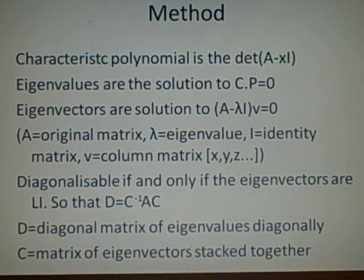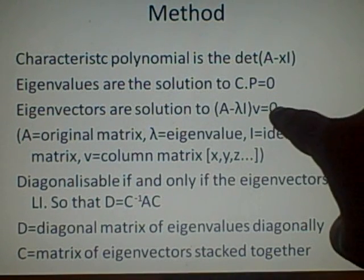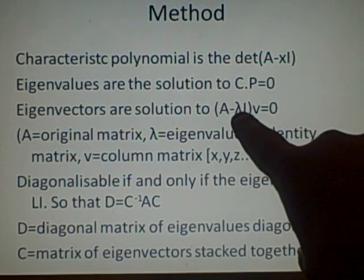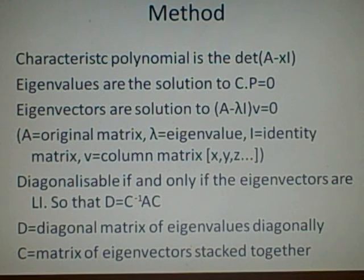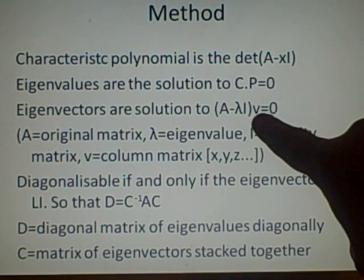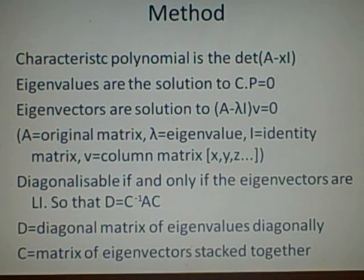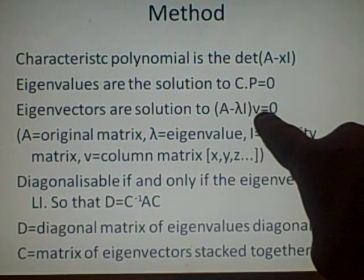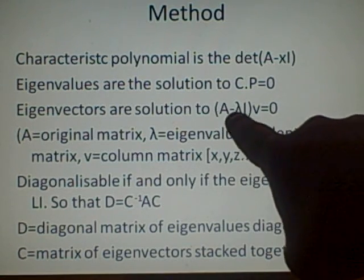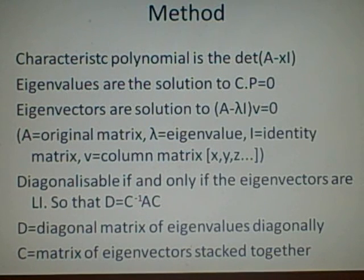And the eigenvalues are the solutions to this when it equals zero. Now, once you've got those, we use each of them, we're referring to them as lambda here. For each of them, find an eigenvector. So with the associated eigenvalue, we do A minus lambda I, which is our identity matrix, times V. Now V, this is our eigenvector, and we're trying to solve these eigenvectors, such that if we multiply this by V, we'll get zero. And I've got three examples coming up.